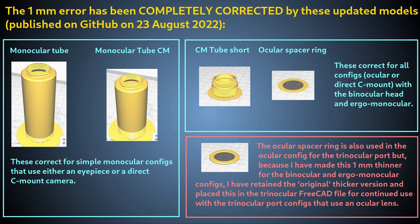I corrected this problem by updating the design of just 4 parts to make them 1mm shorter than before. This update was posted on GitHub on the 23rd of August 2022, so anyone printing a Puma microscope from models downloaded from the main GitHub branch after that date has nothing to do, because for you, this design error doesn't exist.